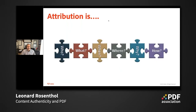So what is attribution? It's who did something, what did they do, when did they do it, potentially where the act took place, maybe even why something was done, and how — what tools and processes were used to accomplish the goal. Not all of these are required at any one time, but these are the components that make up attribution, and what we want to incorporate into the information included with every one of our assets.